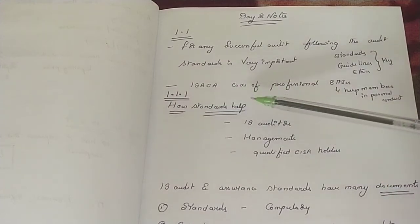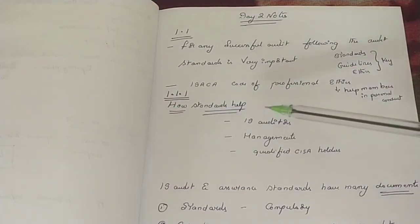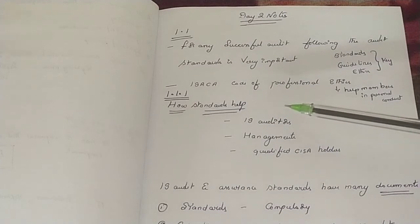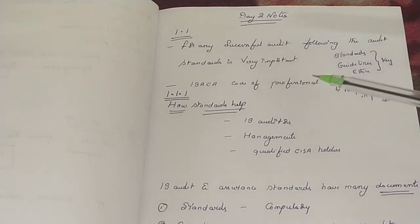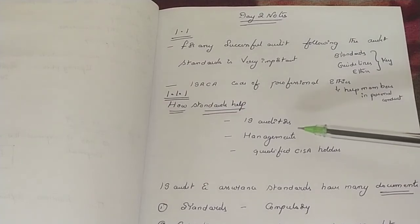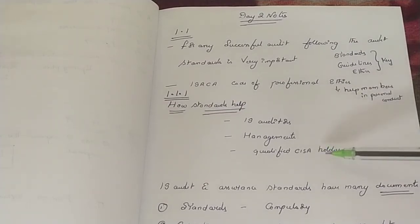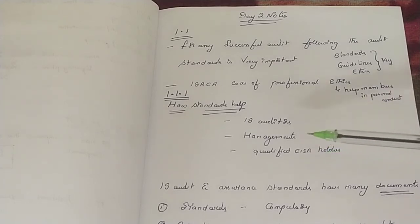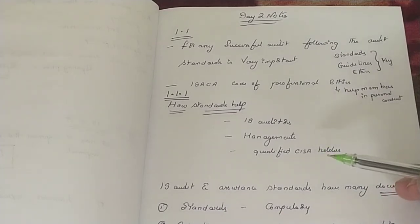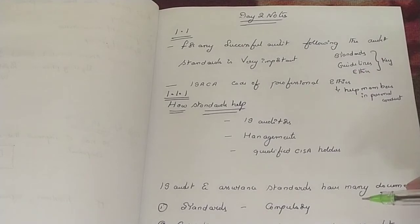Coming to section 1.1.1, that is IS Audit and Assurance Standards. It explains how these standards will help and for whom. Generally, they will help people who are doing IS audits, such as IS auditors, management, and qualified CISA holders or other professionals. These standards will be helpful in their IS audit activities. For exam purposes, there is no need to memorize all the standards with serial numbers — you must just have a basic idea.